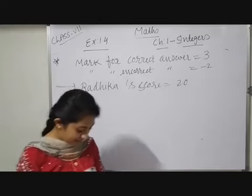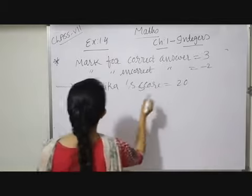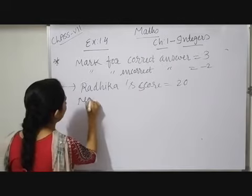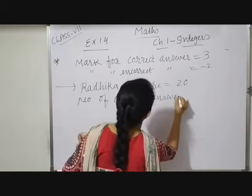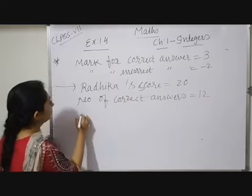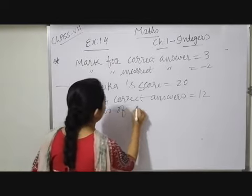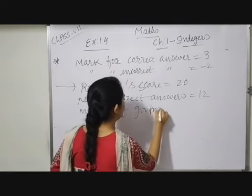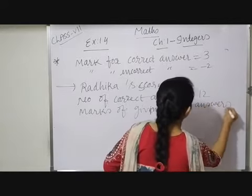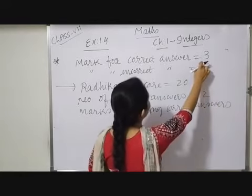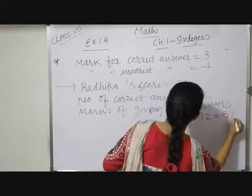If she got 12 correct answers, how many questions did she attempt incorrectly? First, the number of correct answers is 12. Marks obtained from correct answers equals marks per correct answer times 12, that is 3 × 12 = 36.